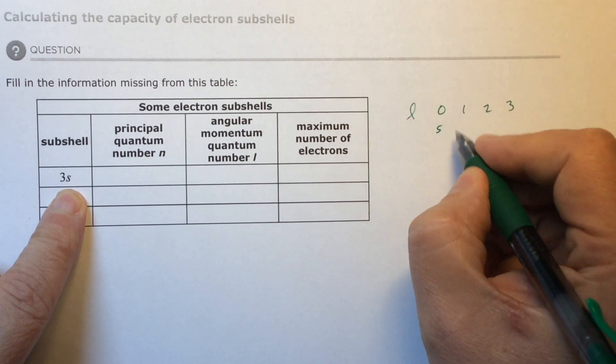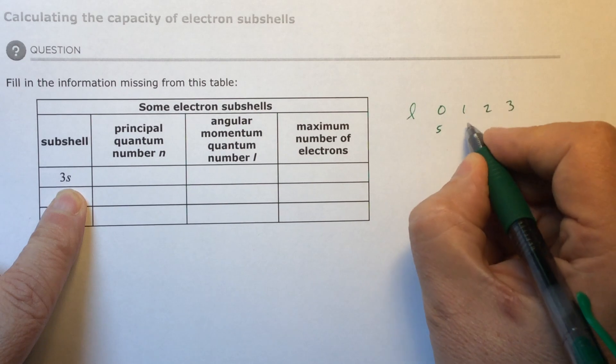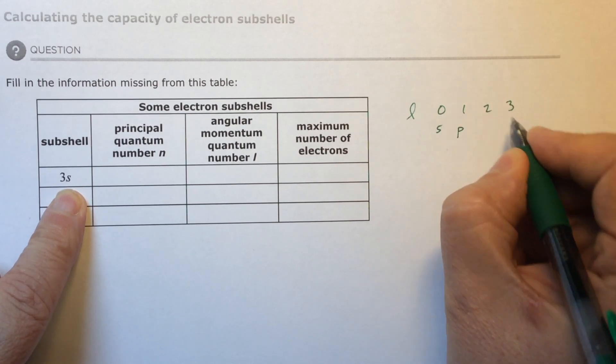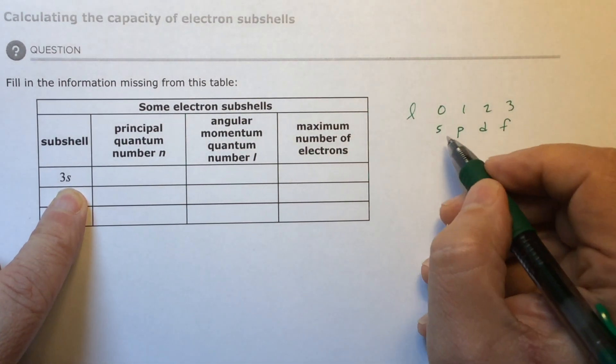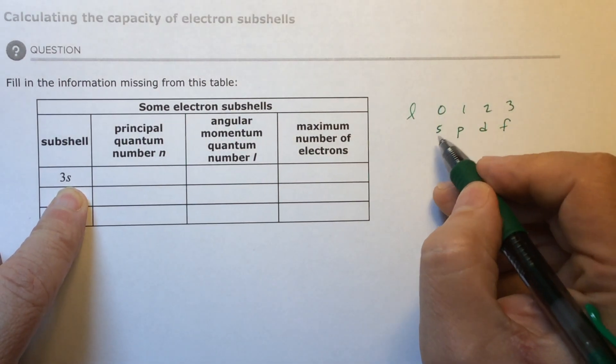An S, if L equals zero, is an S. If L equals one, it's a P. If L equals two, it's a D. If L equals three, it's an F.